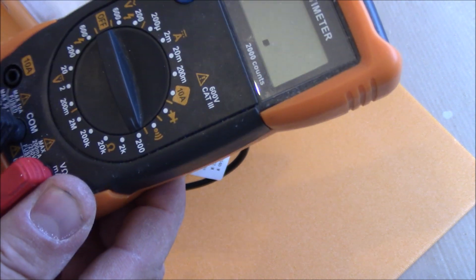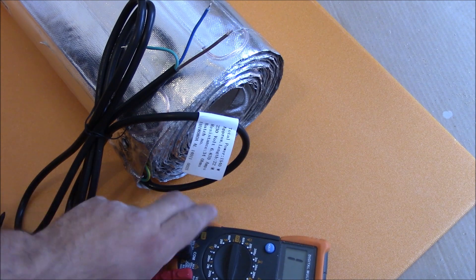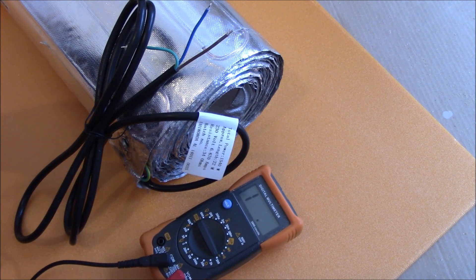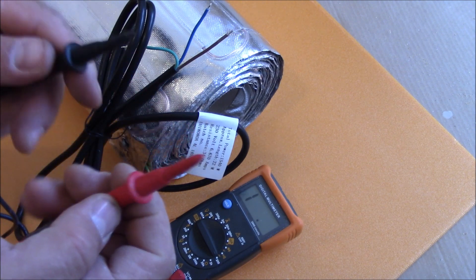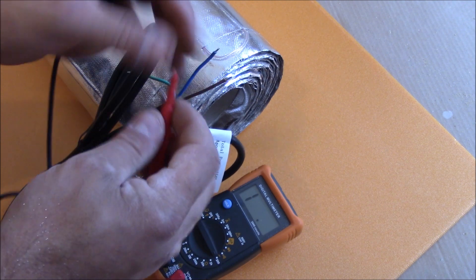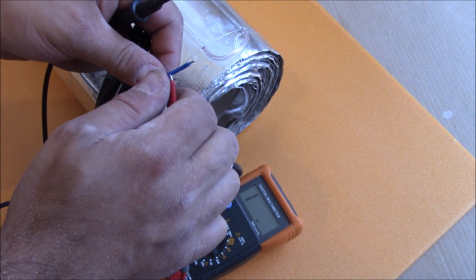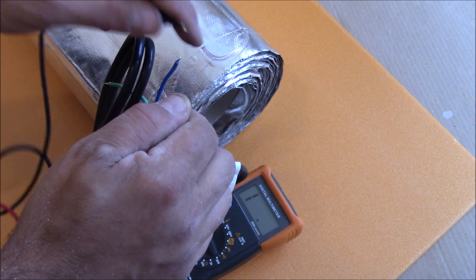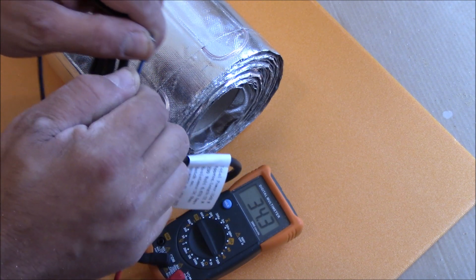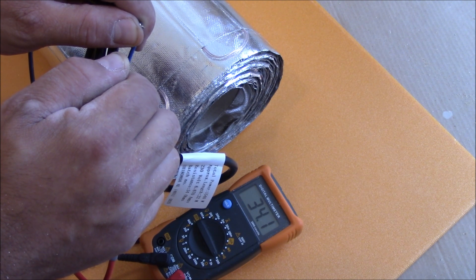So let's set the multimeter onto the resistance range, 200. Then we need to take these two probes from the multimeter and stick the two probes to these two wires at the end, the brown one and the blue one. And as you see the multimeter shows the resistance of the mat.